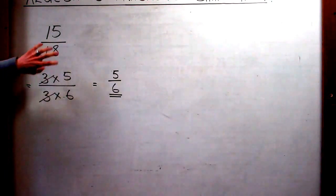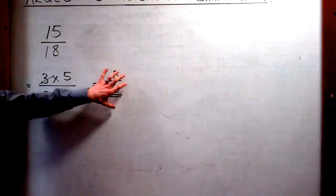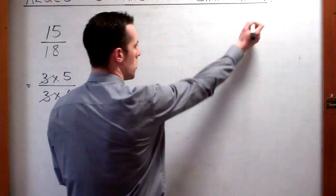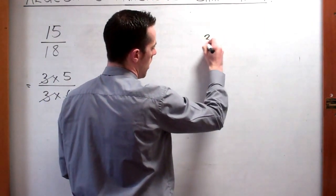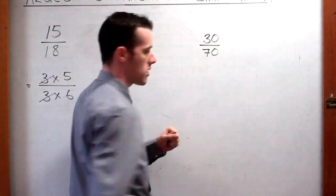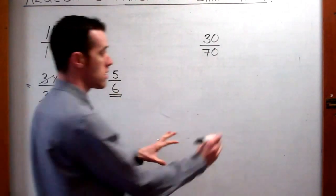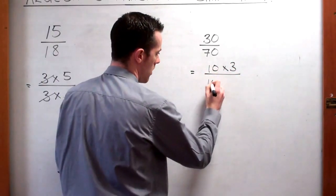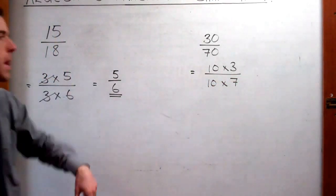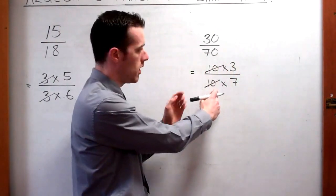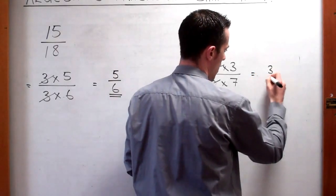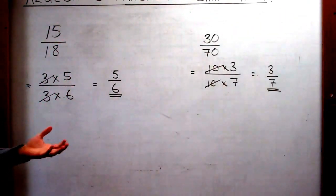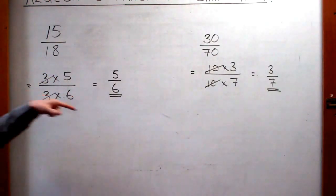That's really the maths behind what's happening with our simplification — 15 eighteenths to 5 sixths. Let's look at one more. If we have 30 over 70, we write that in terms of factors: 10 times 3 on the top and 10 times 7 on the bottom. We cancel the 10s because 10 over 10 is 1, so that gives us 3 sevenths. It's all around the concept of splitting numbers into factors and knowing that any number over itself equals 1.